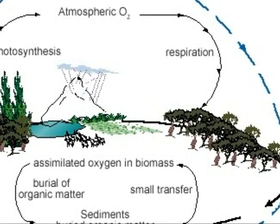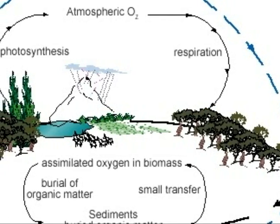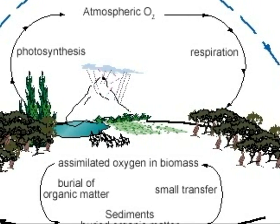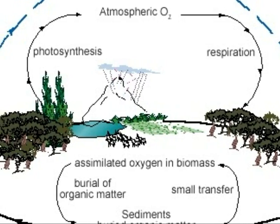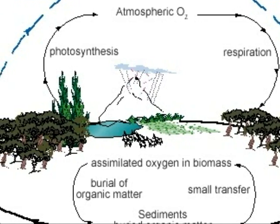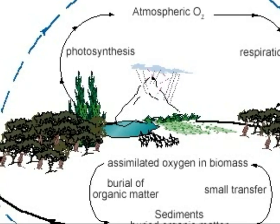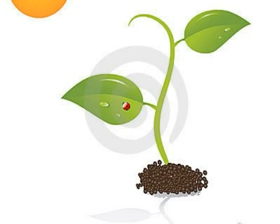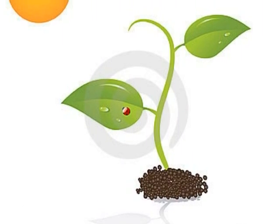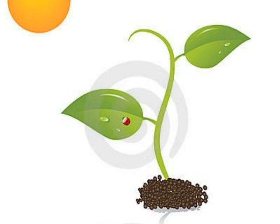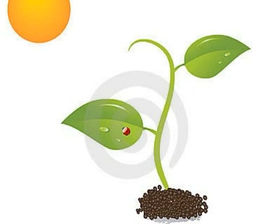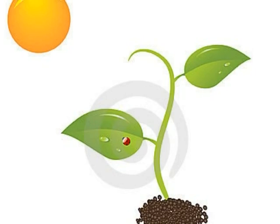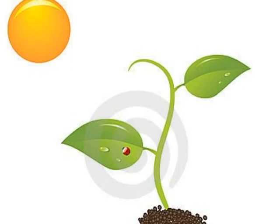The Oxygen Cycle. The oxygen cycle starts out with oxygen in the atmosphere. Through respiration, animals and plants take in oxygen and give off carbon dioxide. The plants then use sunlight to turn carbon dioxide into oxygen through a process called photosynthesis. Plants give off about 10 times more oxygen during photosynthesis than they consume during respiration.